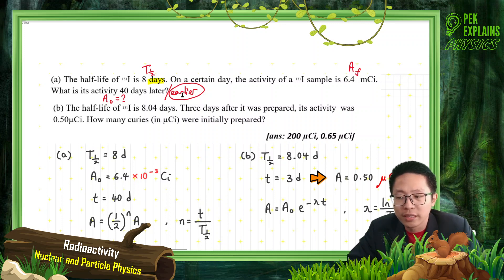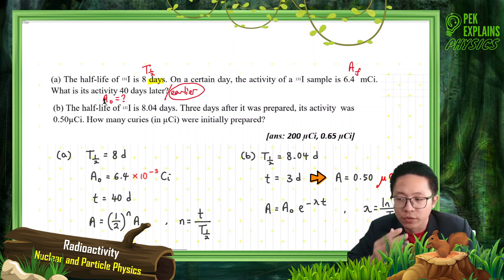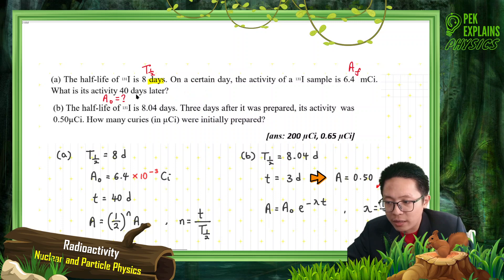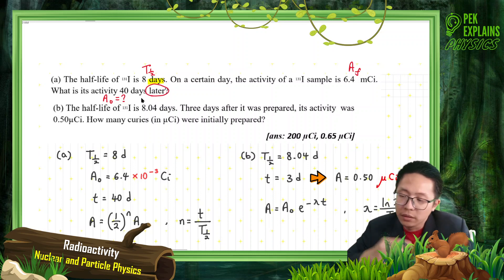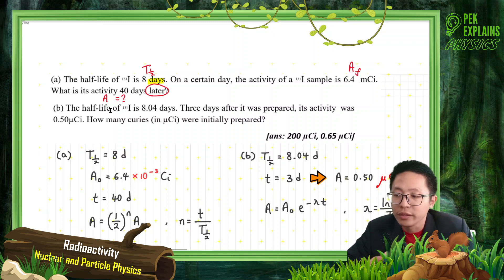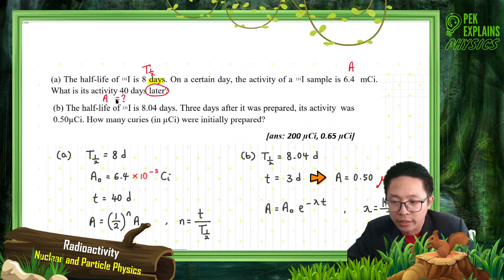If he asked for activity 40 days earlier, that means he asked for the initial activity. If the question asked for activity 40 days later, he asked for the final activity. For this question, the question asks for activity 40 days later, so he wants the final activity — and this given activity will be the initial activity.